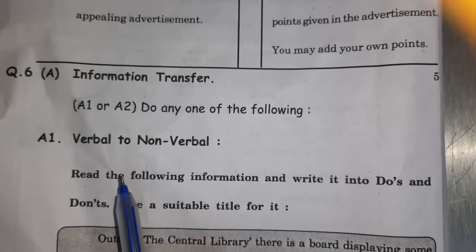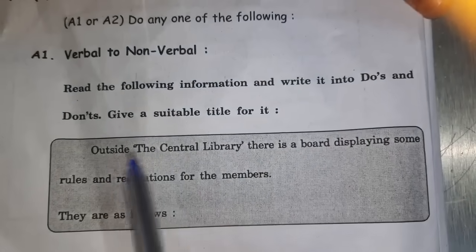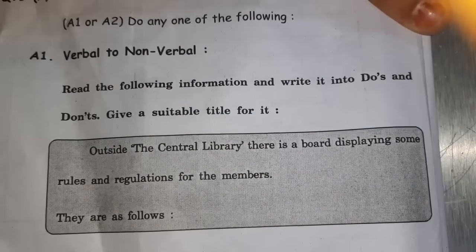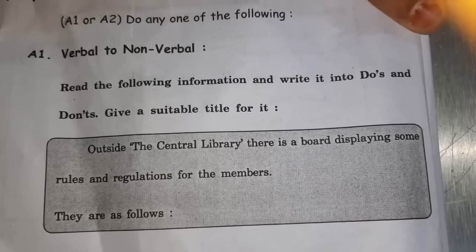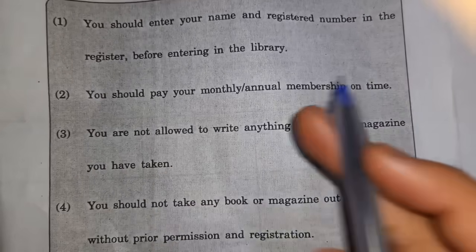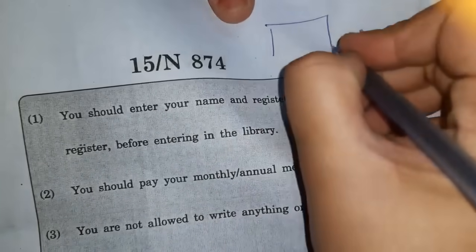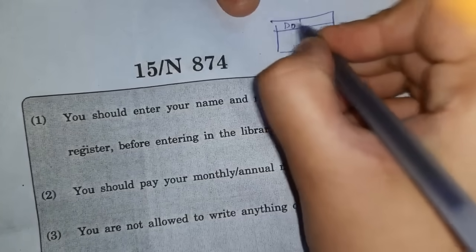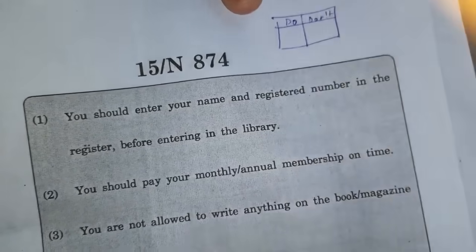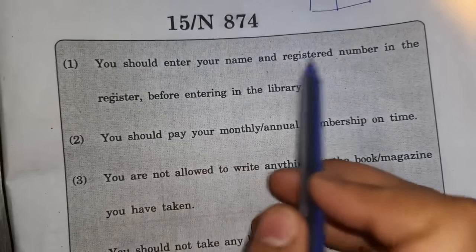Information transfer — any one. Verbal to non-verbal: outside the library, a board is displayed with rules and regulations mentioned. The members have do's and don'ts — one table with two columns: do's and don'ts. For do's: enter your name and registered number in the register before entering the library; pay your monthly and annual membership on time.